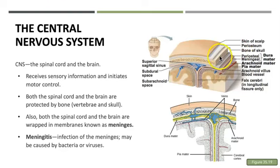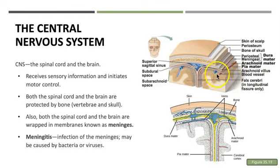We can see the meningeal layers here. We have a tough dura mater, then the more delicate arachnoid mater, and lastly the most intimate layer, the pia mater, which is adhered right onto the brain. We see a similar arrangement for the spinal cord. Sometimes these meninges can become inflamed or infected — that is called meningitis, and it is known to be caused by bacteria or viruses.